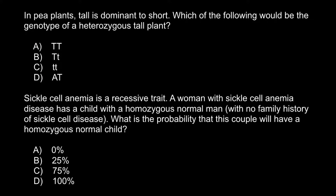Answer D shows two genes — gene A and gene T — and in a diploid organism we expect the same gene to be present in two copies, so this is not our answer. Answer C shows two alleles of the same gene, but both alleles are recessive, so this is going to be a phenotypically short plant.